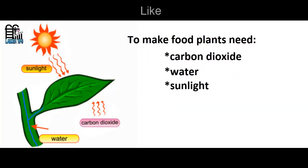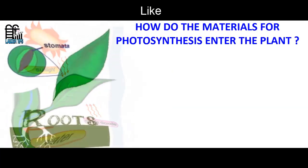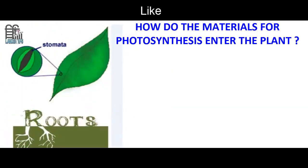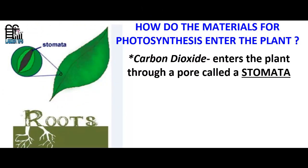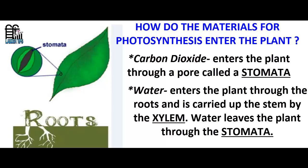How do the materials for photosynthesis enter the plant? Carbon dioxide enters the plant through a pore called a stomata. Water enters the plant through the roots and is carried up the stem by the xylem.